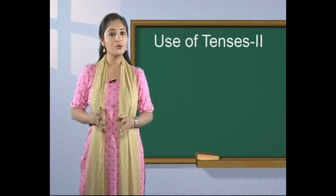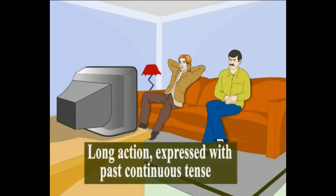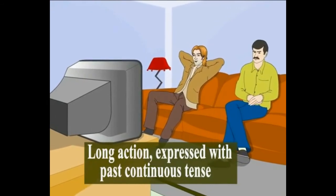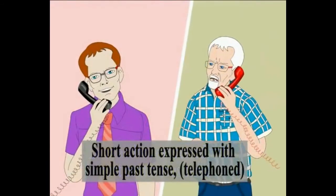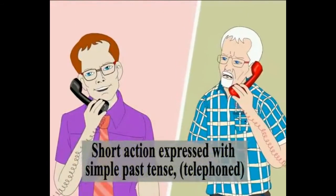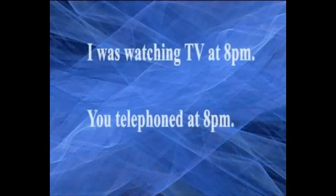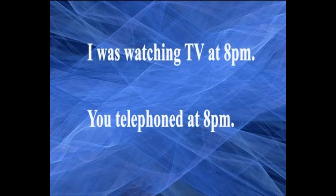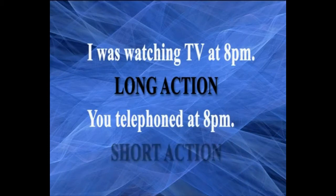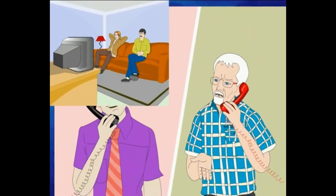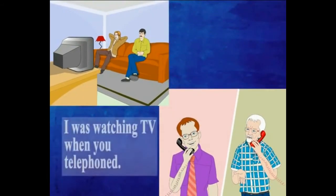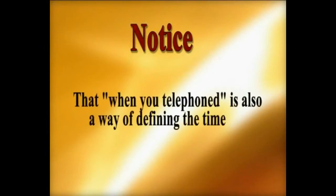In these examples, we have two actions. Long action expressed with past continuous tense. For example, watching TV. Short action expressed with simple past tense. Telephone. For example, I was watching TV at 8pm. Long action. You telephoned at 8pm. Short action. We can join these two actions with when. I was watching TV when you telephoned. Notice that when you telephoned is also a way of defining the time, 8pm.